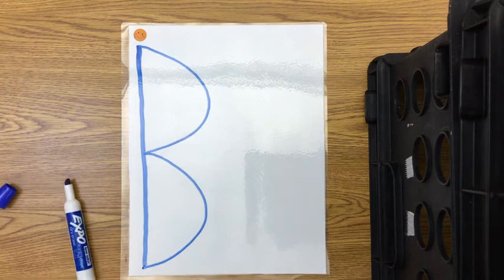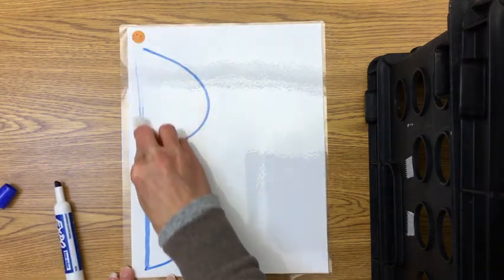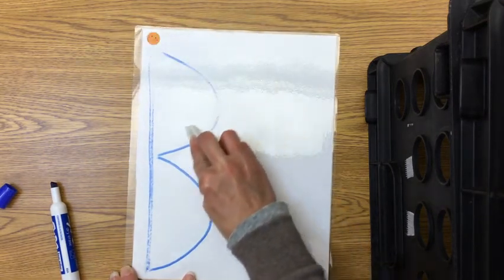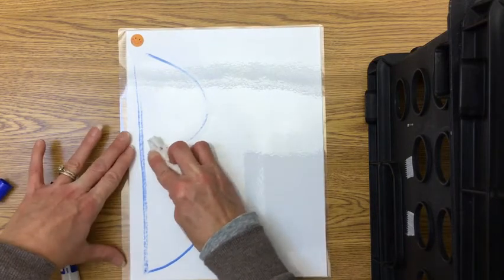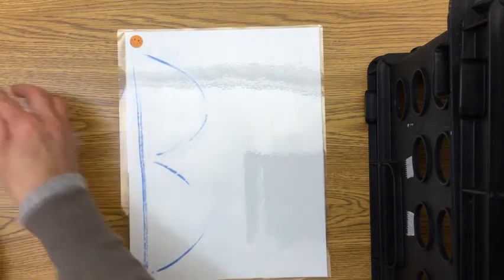Now let's erase it the way that we wrote it. Big line down, hop to the top, little curve to the middle, little curve to the bottom to write the letter B.